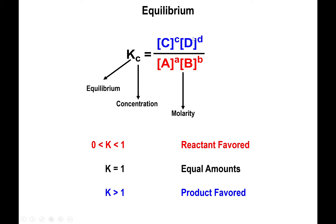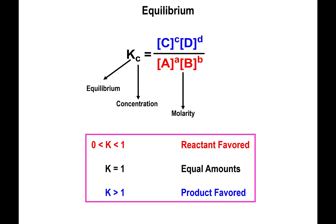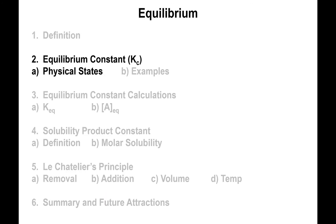So K greater than one means a product-favored reaction. Just by looking at the value of the equilibrium constant you can tell whether products or reactants are favored. Now when deriving the equilibrium constant expression, it is important to pay attention to the physical states.